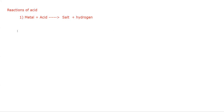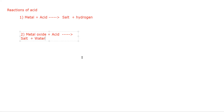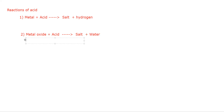The second reaction we'll do today: metal oxide plus acid. So if you have metal oxide reacting with acid, this will result in a formation of salt plus water. This is the second reaction. Metal oxides — we normally call metal oxide as insoluble base as well.